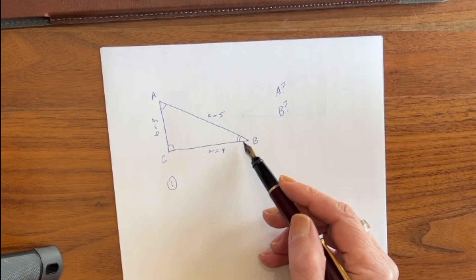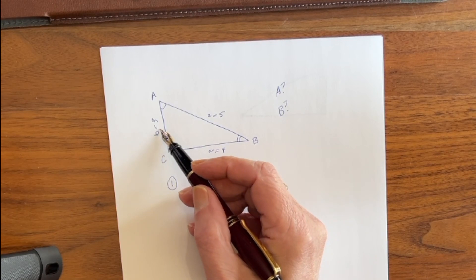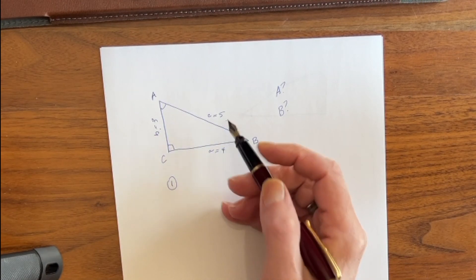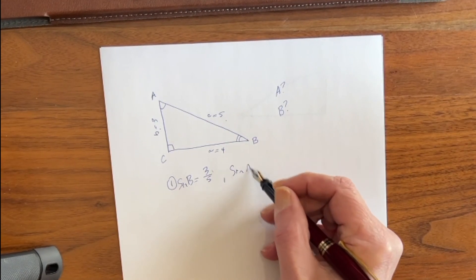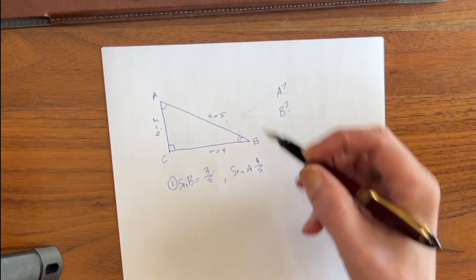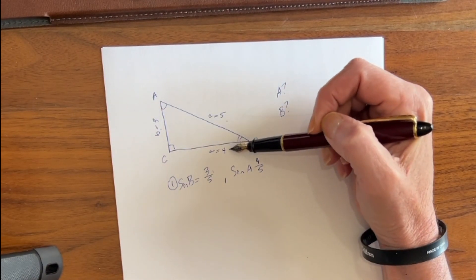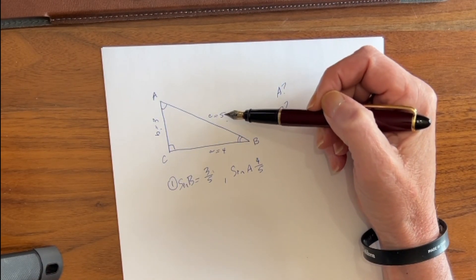First of all, the sine of angle B will be the opposite side, 3, over the hypotenuse, 5. And likewise, the sine of angle A will be 4 over 5. So here's angle A, the opposite side is 4, the hypotenuse is still 5.